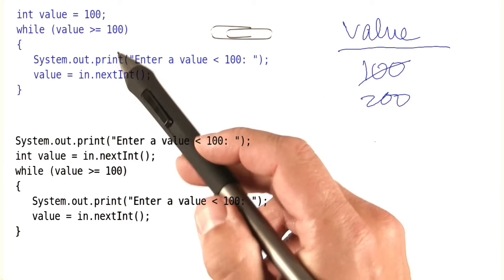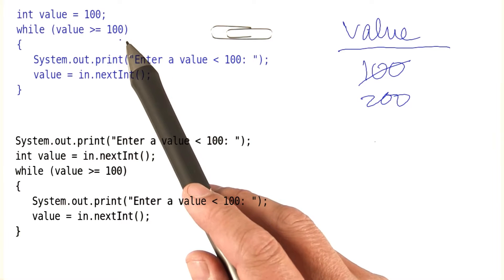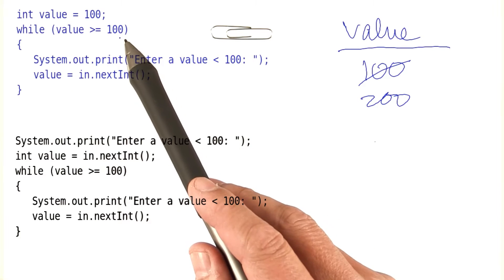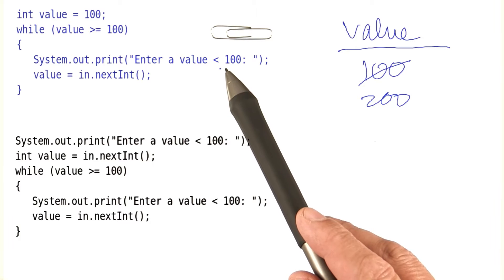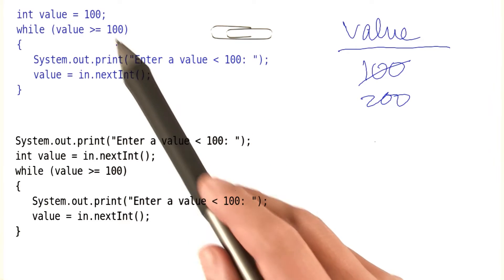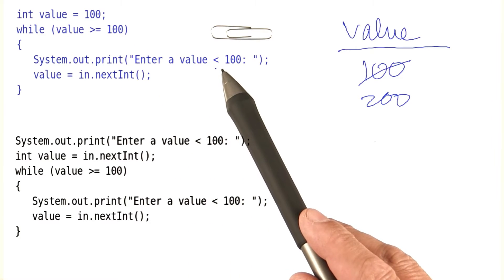That was the whole purpose of this while loop. We wanted to keep asking the user while the value is greater or equal than 100, since our target is to get a value less than 100. Remember, the while condition is always the opposite of the target.